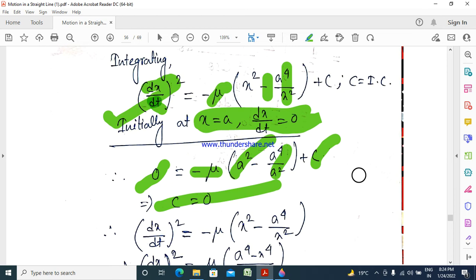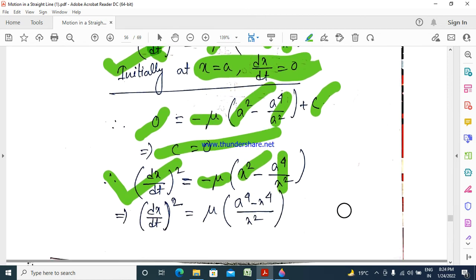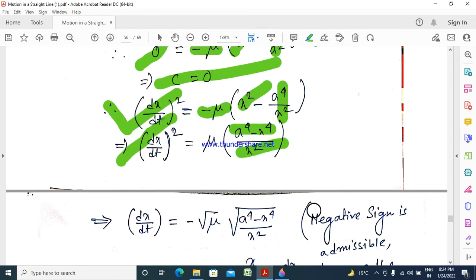Then dx dt squared equals minus mu x squared minus a to the power 4 by x squared. That is dx dt squared equals mu into a to the power 4 minus x to the power 4 by x squared. So dx dt equals minus root mu into root over a to the power 4 minus x to the power 4 by x squared.